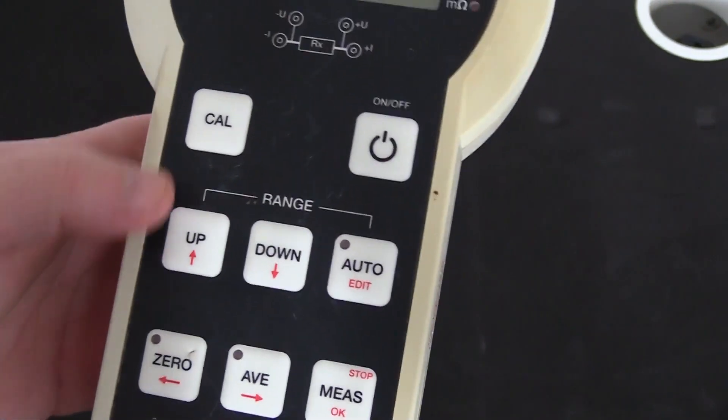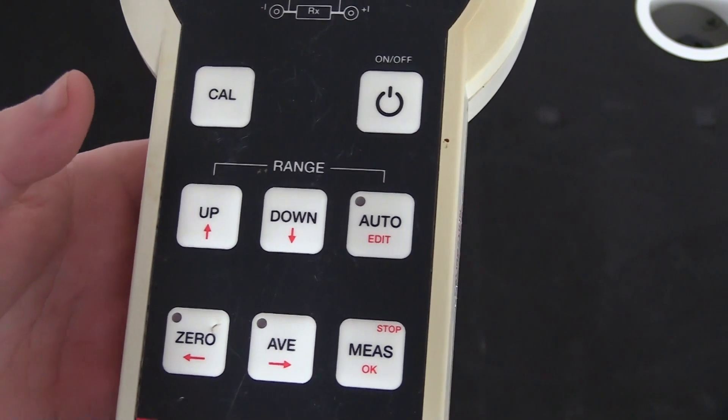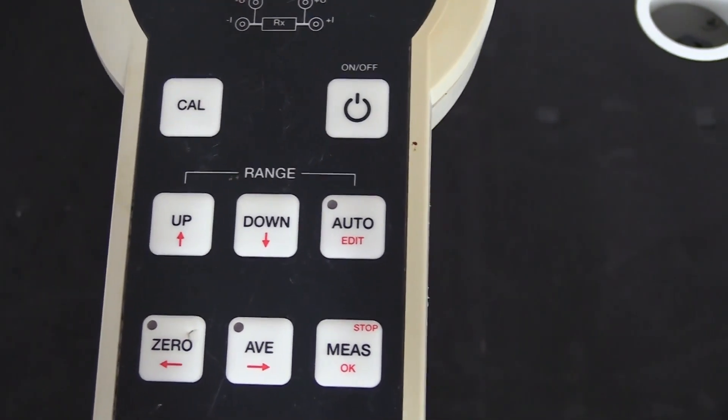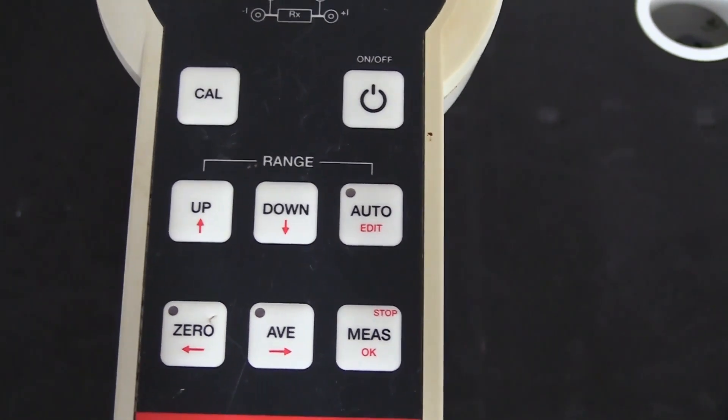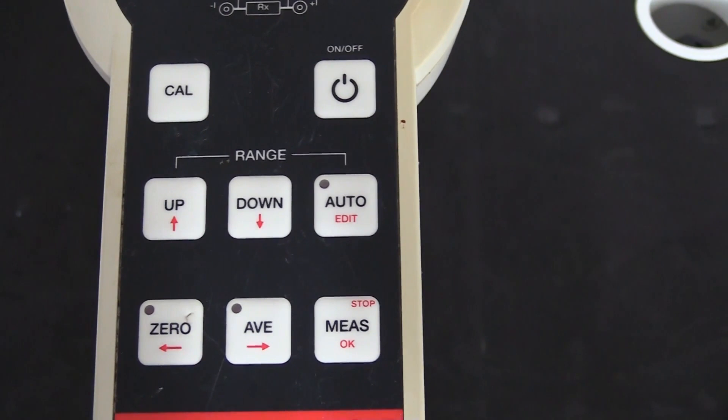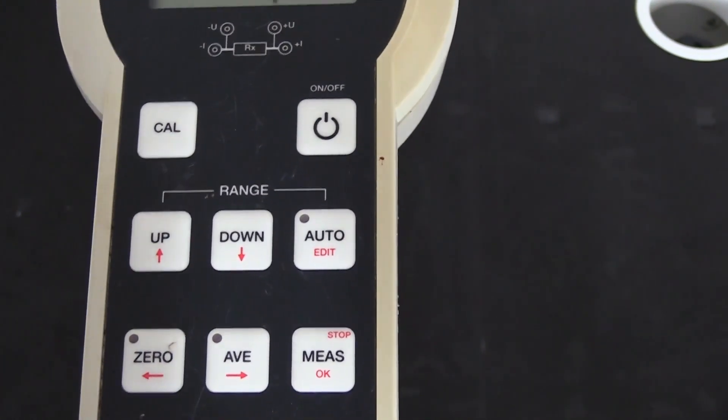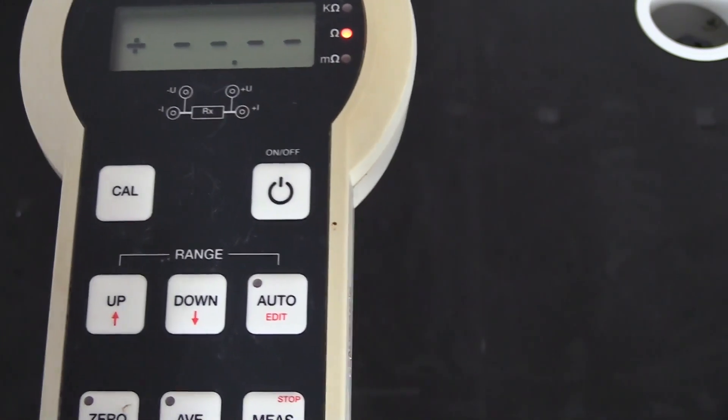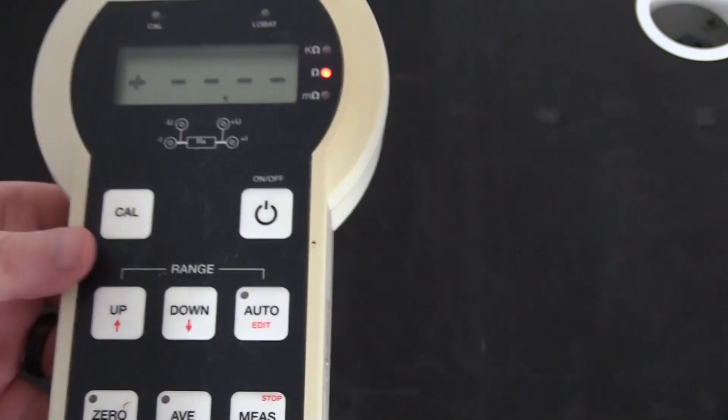Similarly, we can also zero out any resistance we might have in the unit. We can also choose to have an average or single directional current measurement. So for those of you with potential inductive items under test, you may not want to do the average mode. We can simply send the current in one direction. But for most people, nice and simple, on auto measure. We'll quickly demonstrate that now.